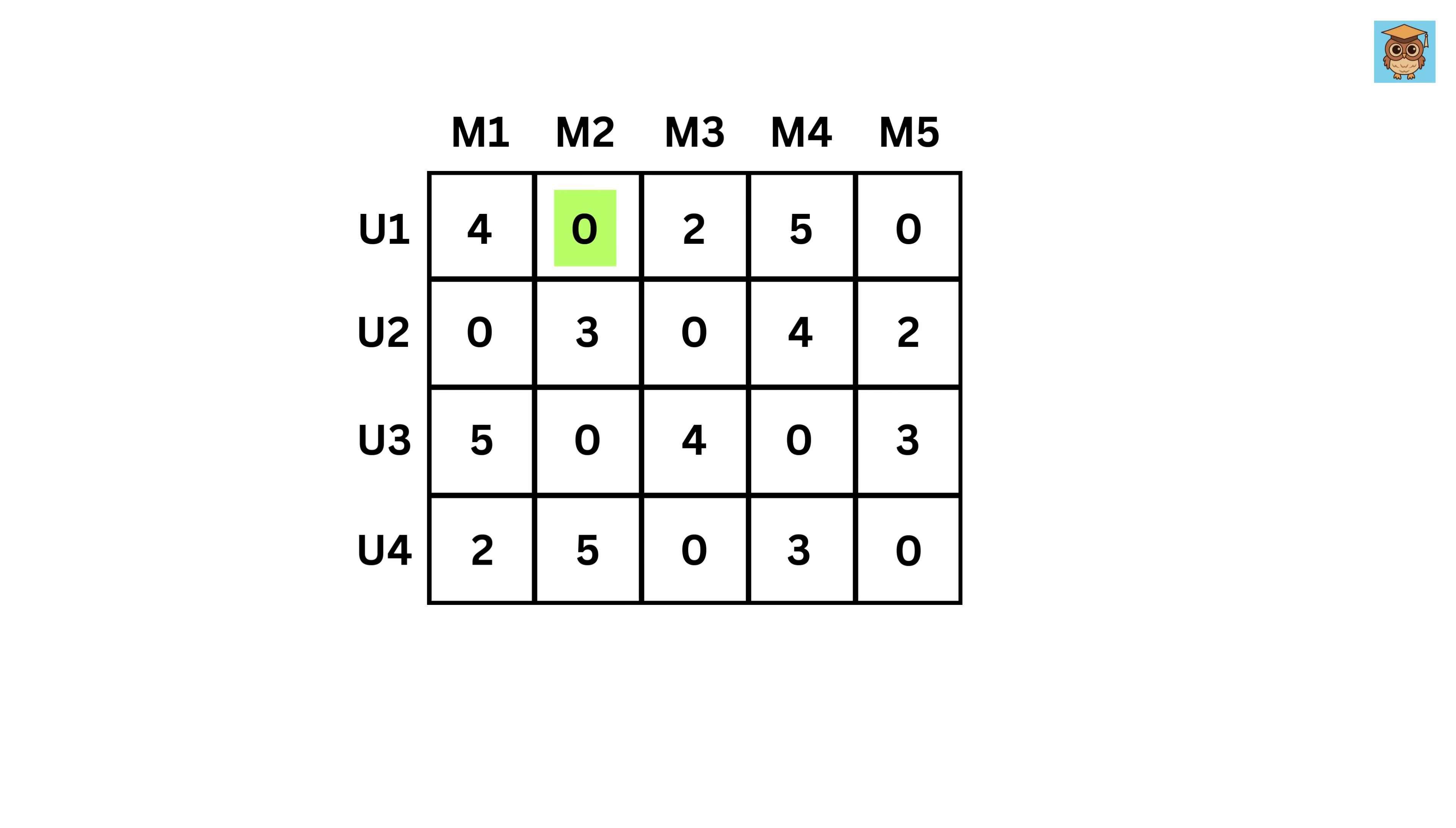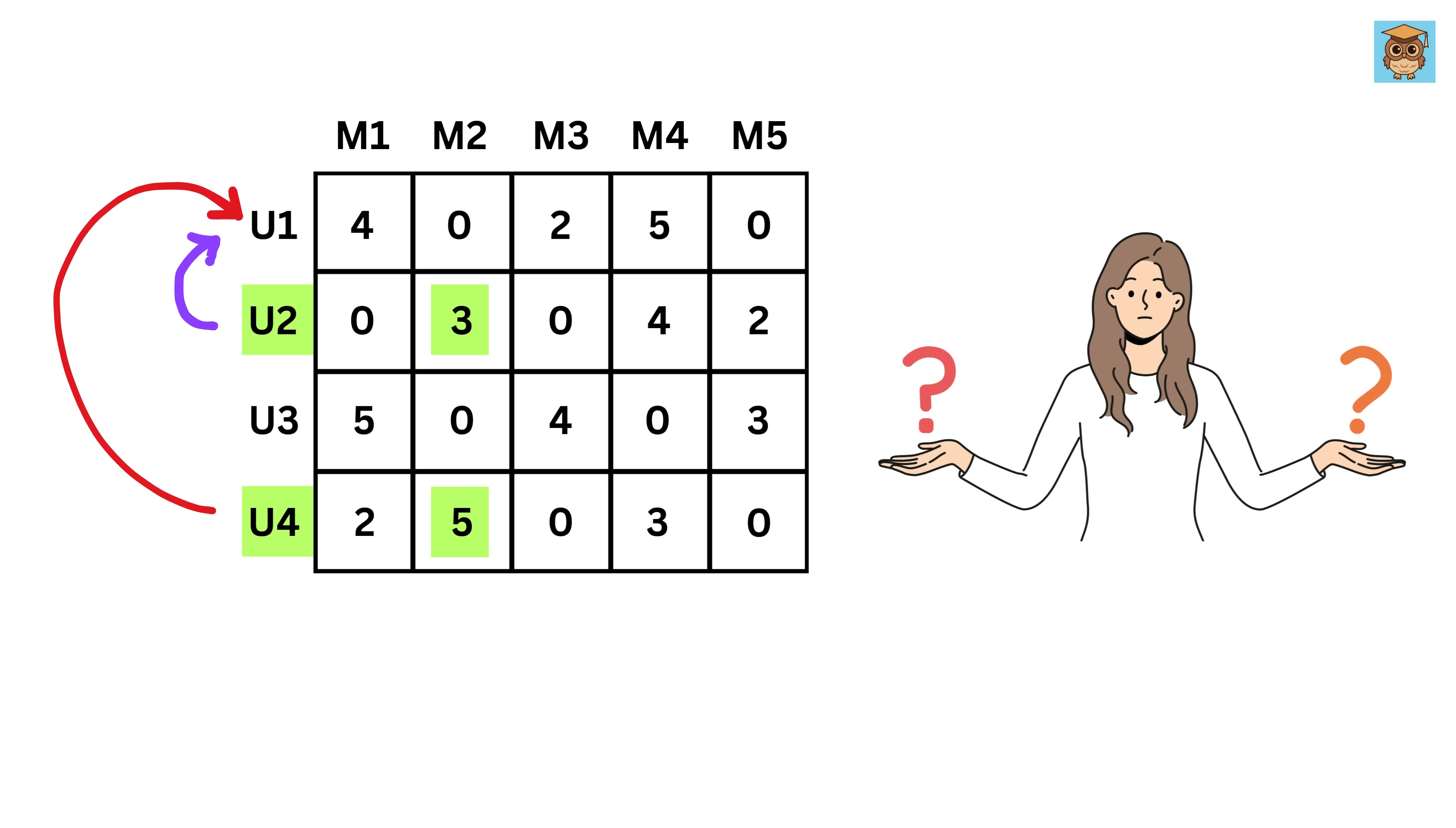Now suppose User 1 hasn't seen Movie 2, which is why we have a zero here. How does Netflix guess what they'd rate it? The trick is to look at friends who have seen Movie 2 and figure out which ones have tastes similar to User 1. Netflix does this with something fancy called singular value decomposition, but let's keep it basic and use a simpler idea. We'll compare friends by checking how alike their ratings are.